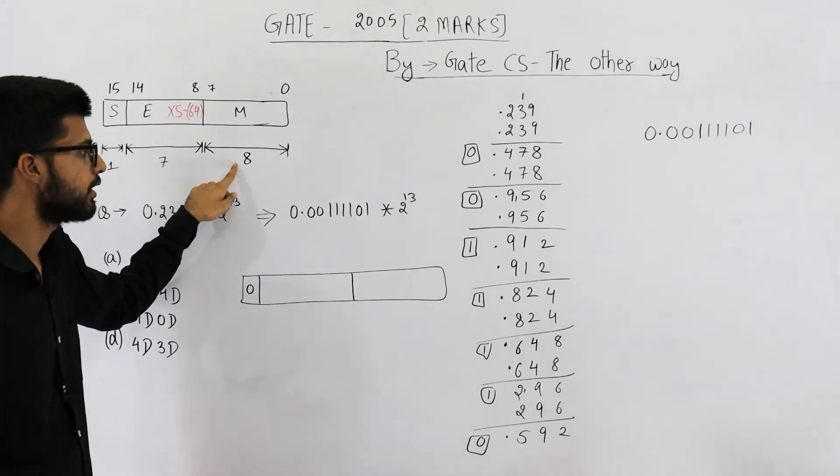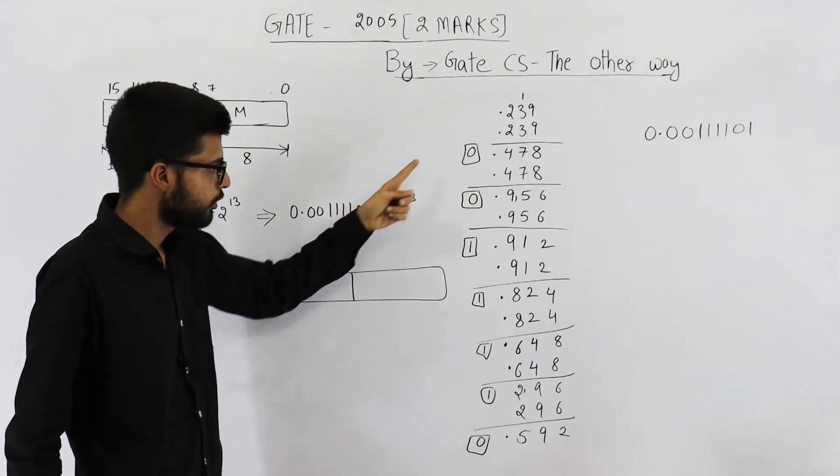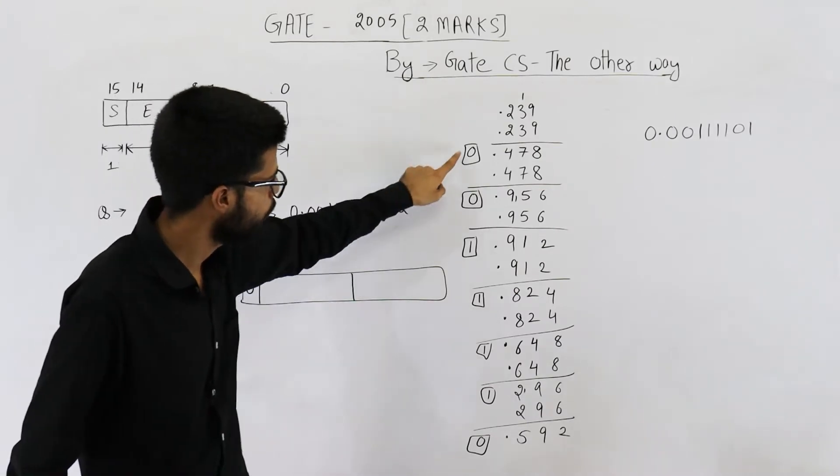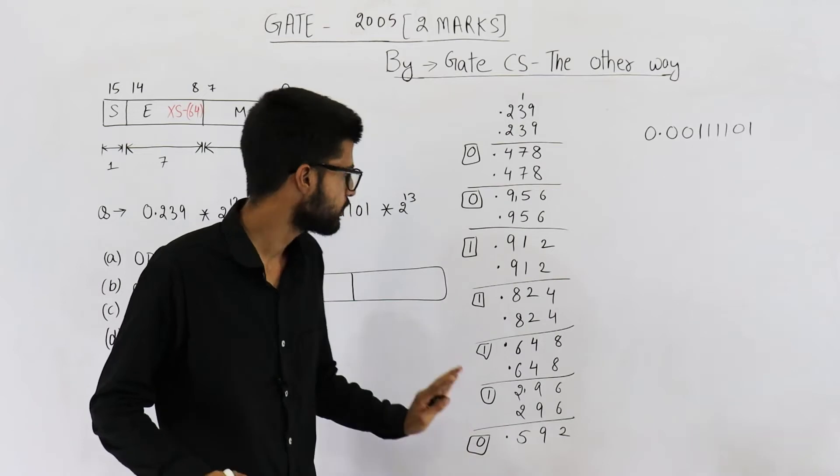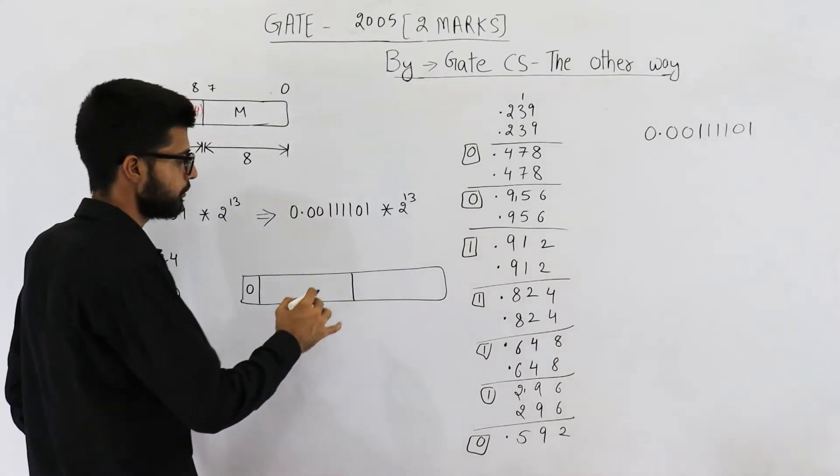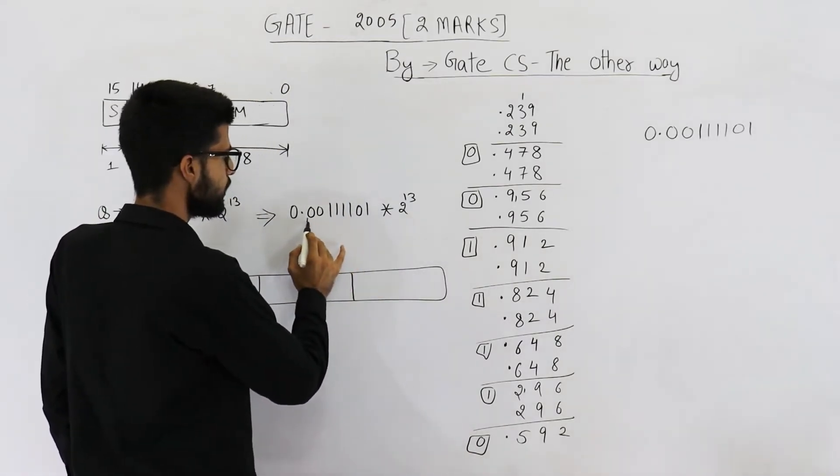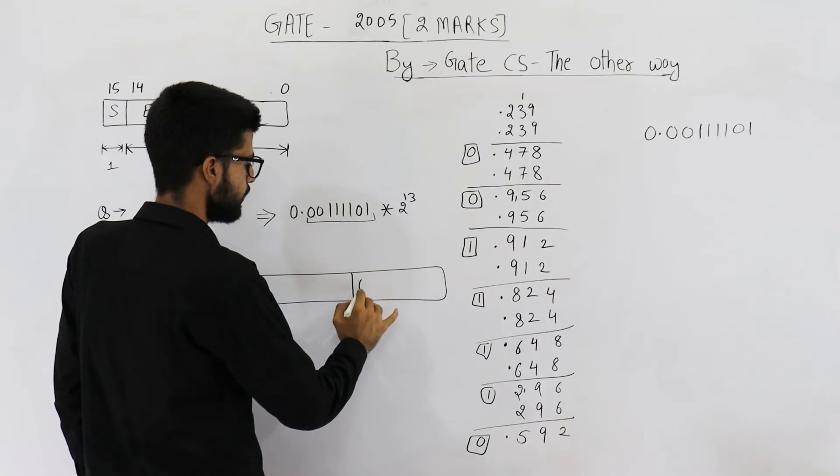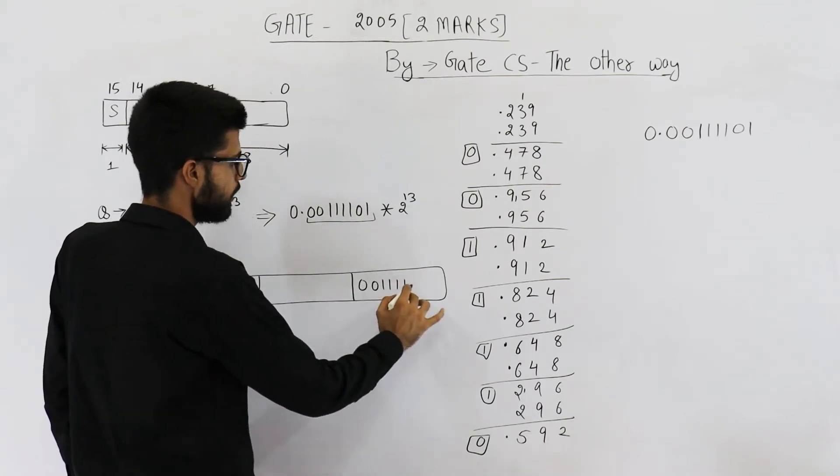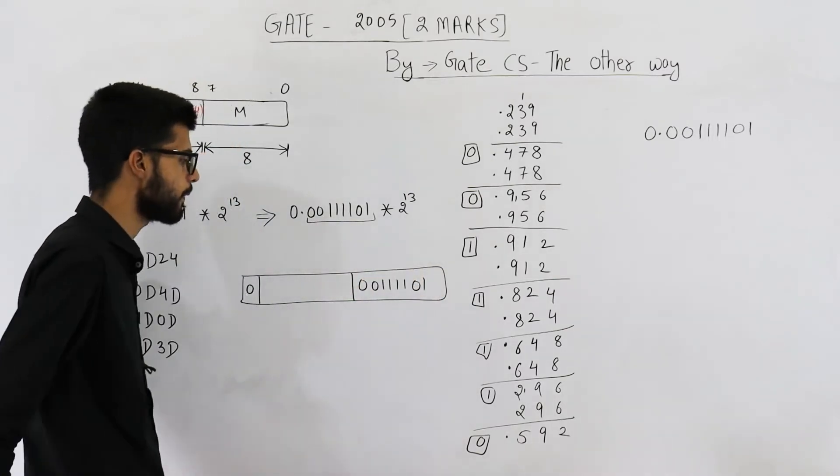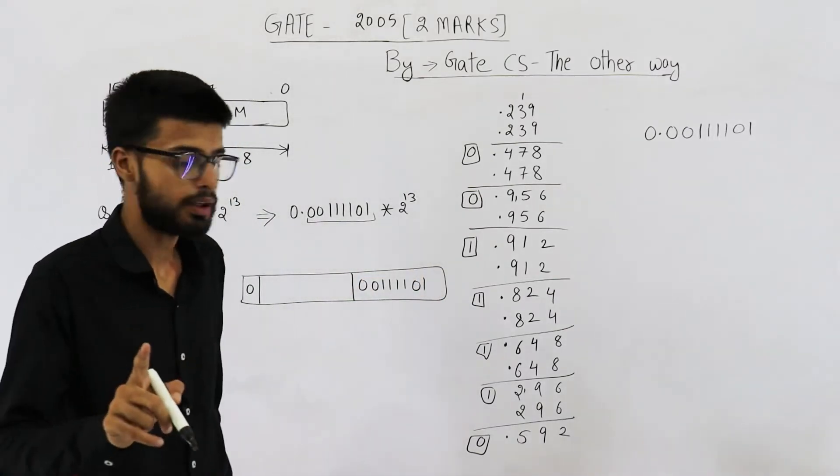So look, sign is positive. So we will be having 0 here. Let us leave some space for exponent bits. We want to save mantissa here. Mantissa is of 8 bits. That means you need to continue this procedure to 8 bits. 1, 2, 3, 4, 5, 6, 7. I have done till 7. Next bit is 1. I am telling it to you. So let us save all of these bits. It is 0, 0, 1, 2, 3, 4 times 1 and 0, 1.